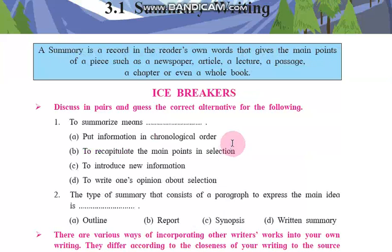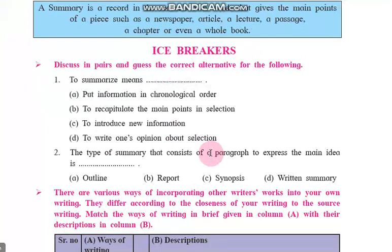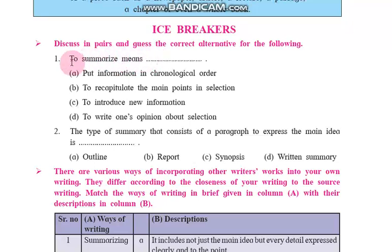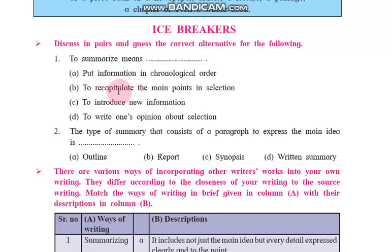Now we start with icebreakers. Discuss in pairs and guess the correct alternative for the following. To summarize means — what is the meaning of summary? Option A: Put information in chronological order. Chronological means arrange in the order in which events happen. Option B: To recapitulate the main points in a selection. Recapitulate means an act or instance of summarizing and restating the main points of something.